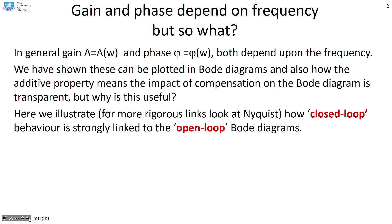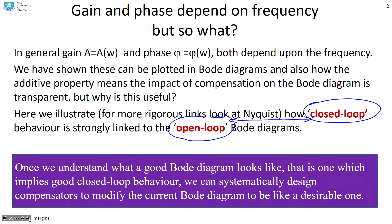Here we're going to illustrate how closed-loop behavior is strongly linked to open-loop Bode diagrams. That's the key thing. Once we understand what a good Bode diagram looks like, that is one which implies good closed-loop behavior, we can design systematically and choose compensators to modify the Bode diagram to make it look like one which we expect to be good.